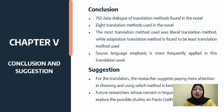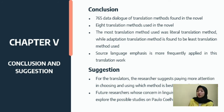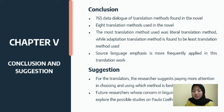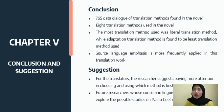We are now in Chapter 5, conclusion and suggestion. The conclusion of this research: 765 data dialogues of translation methods were found in the novel, with all 8 translation methods present. The most frequently used was literal translation, while adaptation was the least used. Target language emphasis is more frequently applied in this translation. The suggestion for translators is to pay more attention to choosing which method is best to translate the text. For future researchers, further exploration of The Alchemist in other linguistic or grammatical areas is encouraged.